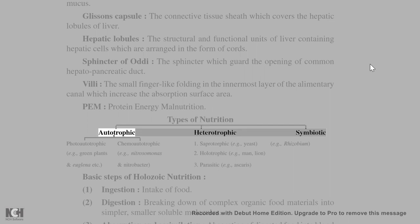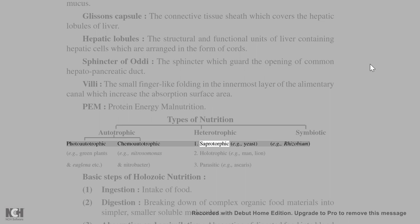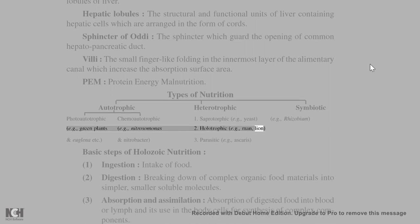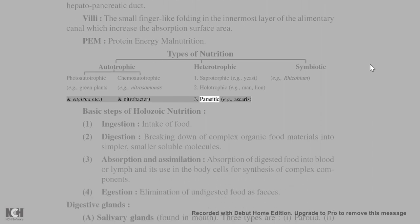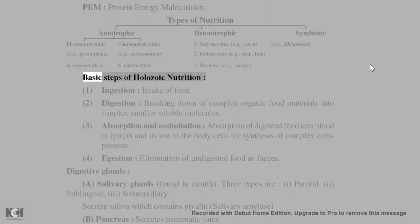Types of nutrition: Autotrophic (Photoautotrophic, e.g., green plants; Chemoautotrophic, e.g., Nitrosomonas and Nitrobacter), Heterotrophic (Saprotrophic, e.g., yeast; Symbiotic, e.g., Rhizobium; Holotrophic, e.g., man, lion; Parasitic, e.g., Ascaris).